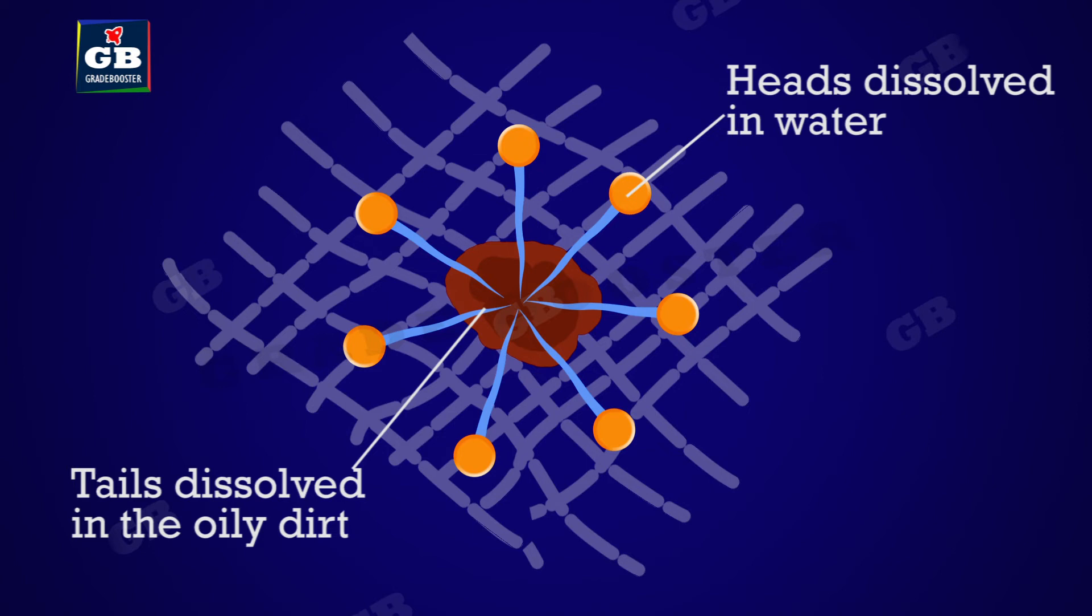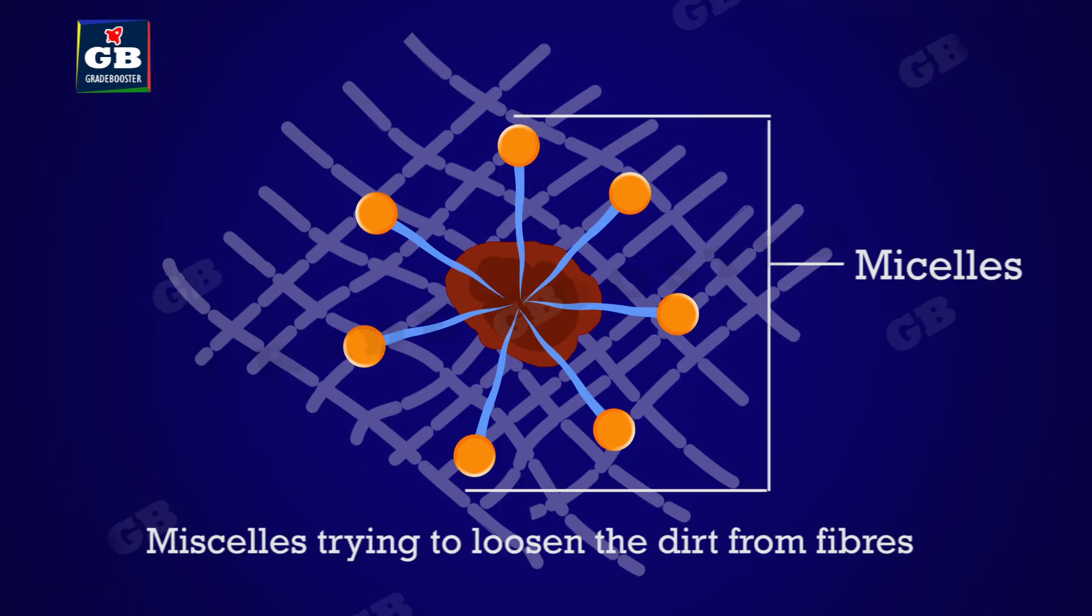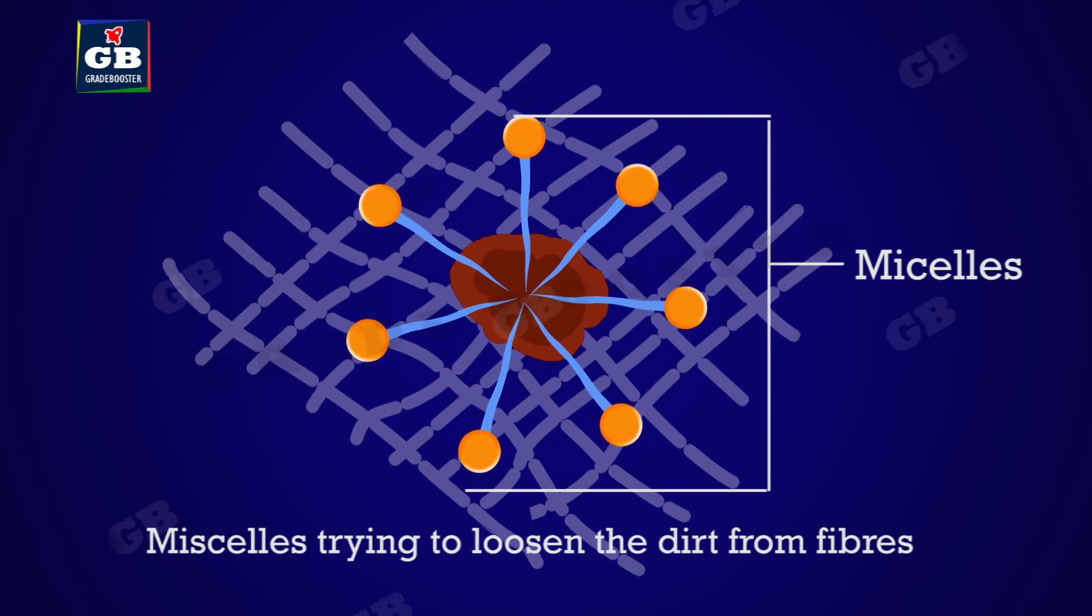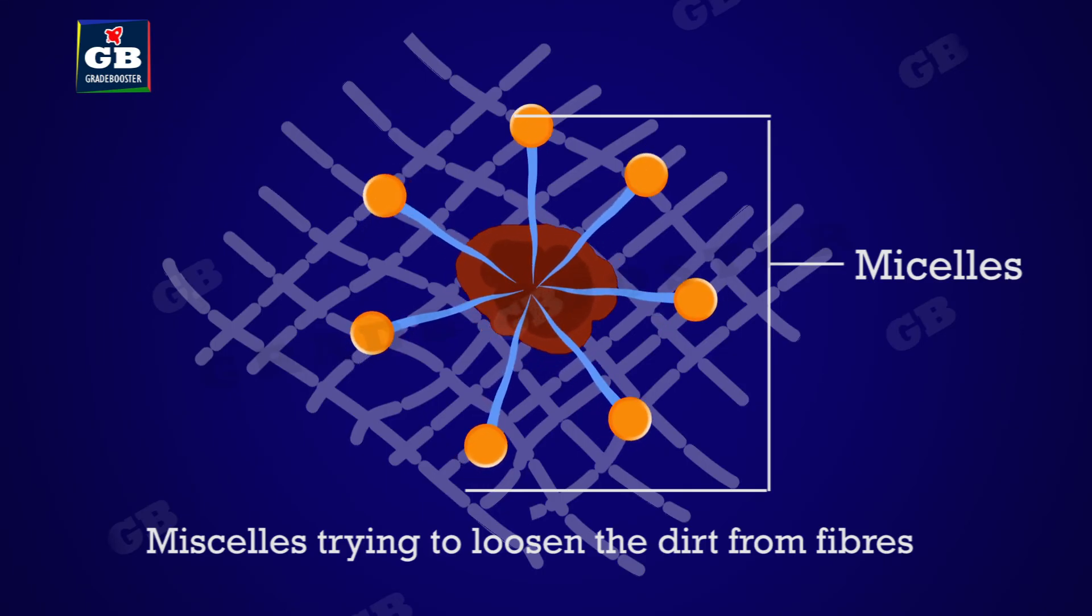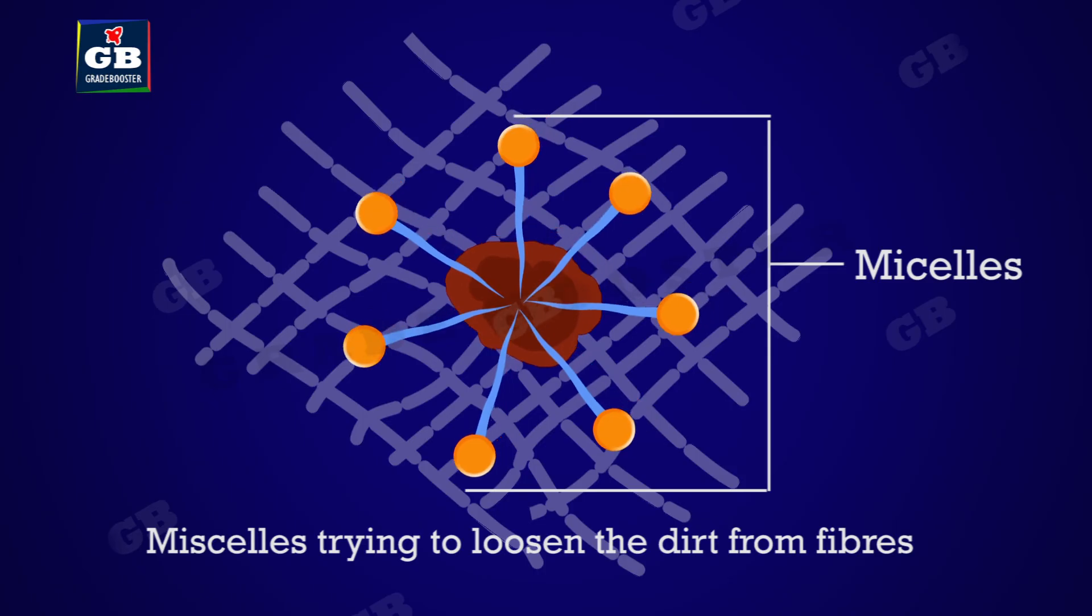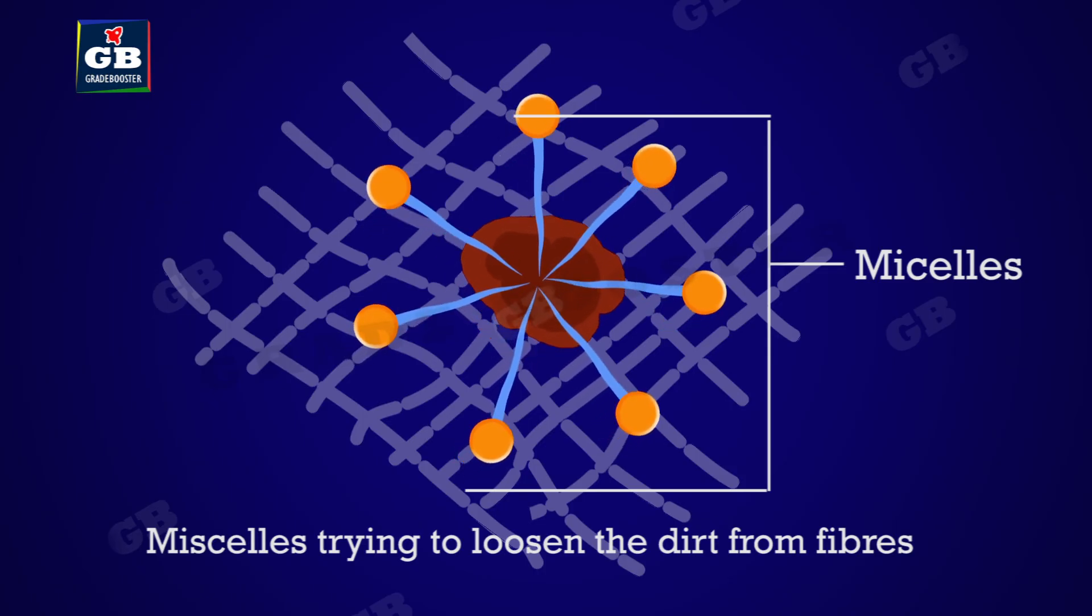These structures are called micelles. They loosen dirt from the fibers of cloths along with dirt. However, this loosening is not enough to take out the tiny droplets of oil or grease along with dirt.